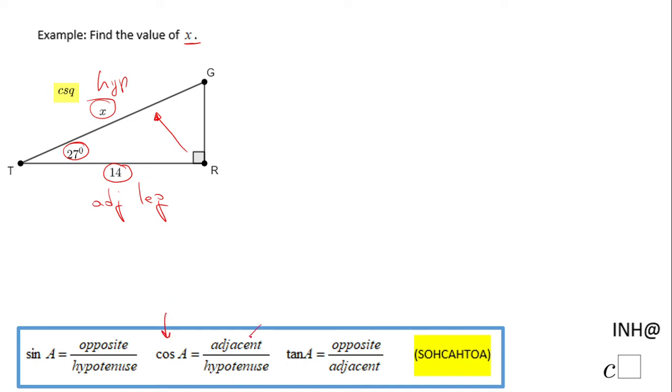The cosine has the adjacent and hypotenuse in it, so I'm gonna write cosine of 27, cosine of T.